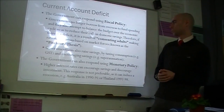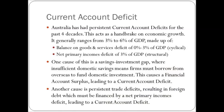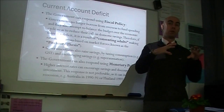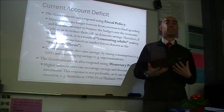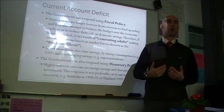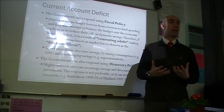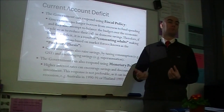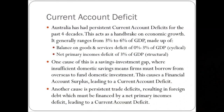There are two ways governments can respond: fiscal policy and monetary policy. With fiscal policy, governments generally don't borrow from overseas to fund spending — they borrow domestically in an attempt to not add to the current account deficit. The problem is that money is fungible: if the government borrows from domestic savings, those savings are crowded out, so domestic firms can't use them and must then borrow from overseas. So it's not enough for the government to just avoid overseas borrowing — they have to not borrow at all.